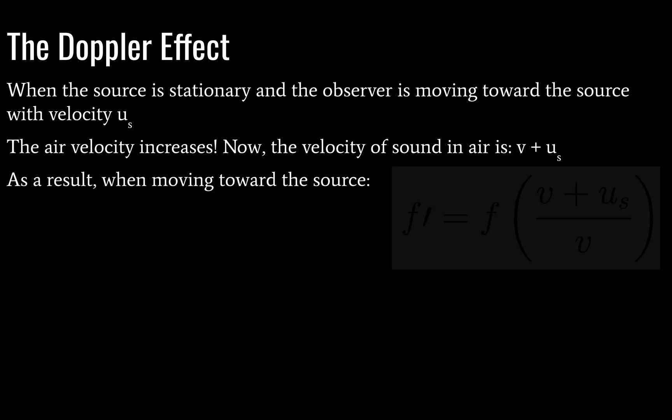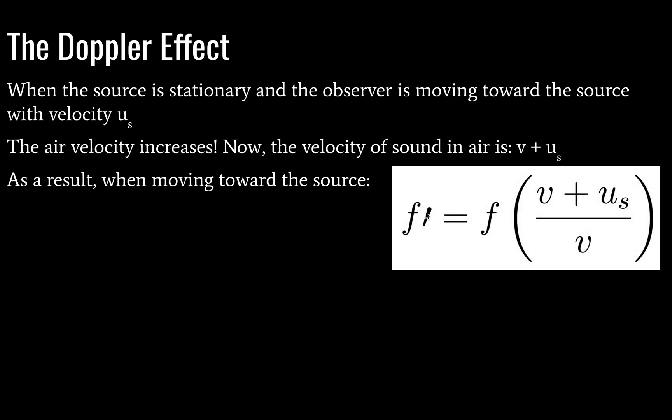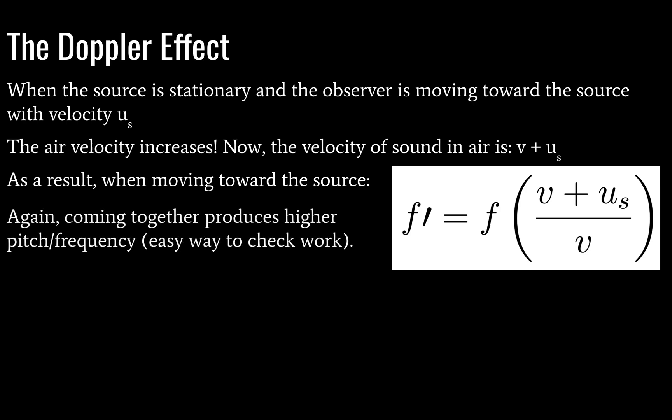So consequently, when we move toward the source, this produces a slightly different equation, where f prime is now equal to our initial frequency times the quantity, the velocity of sound for a stationary object, plus the velocity of the observer, in this case, divided by the velocity of sound in air. Again, these are both when stationary. Okay, I've not included the algebra here, because I was in a little bit of a hurry. But the Socos textbook has a very straightforward math that you can take a look at it. It's not difficult. I was just lazy and in a hurry.